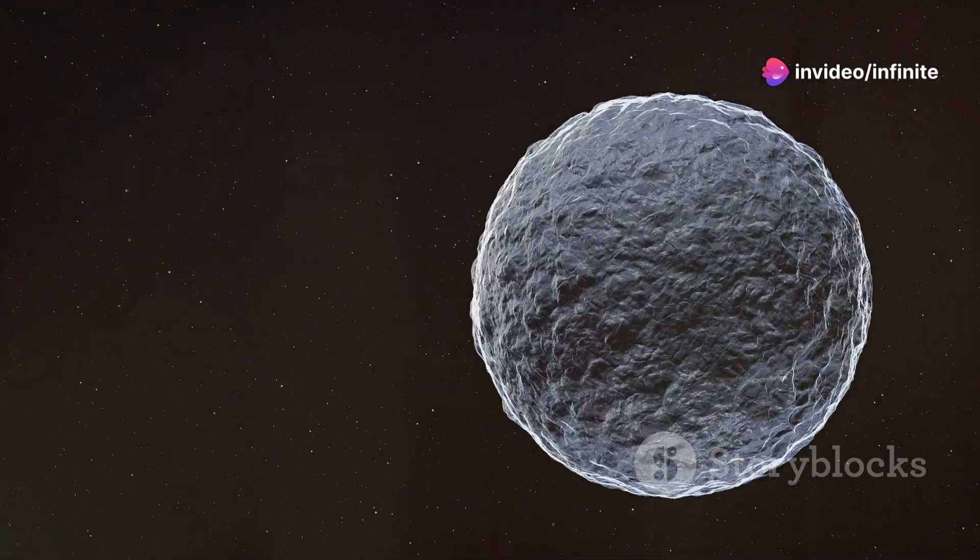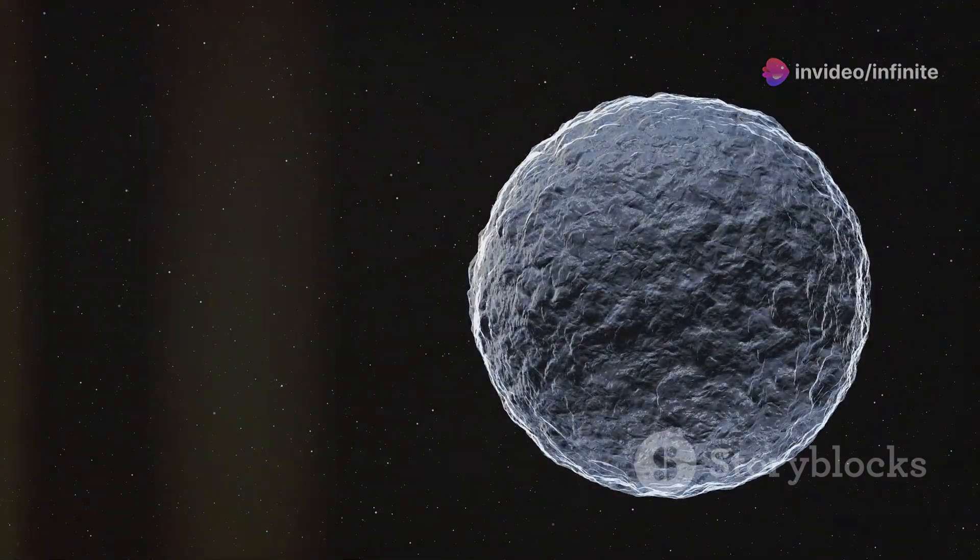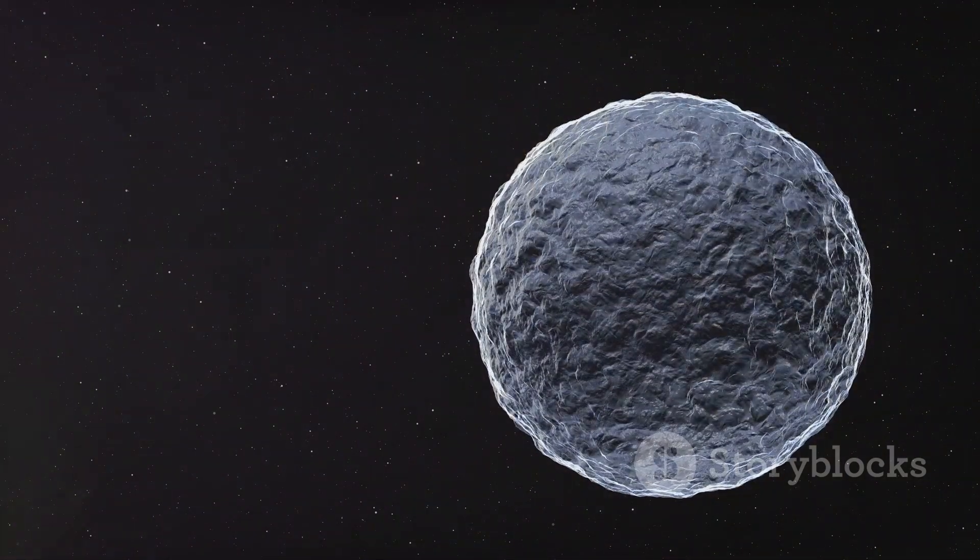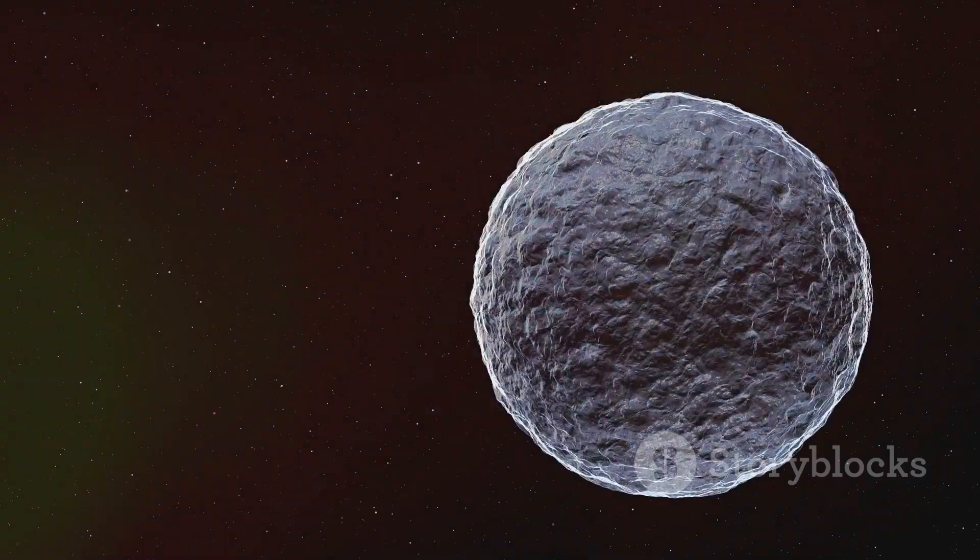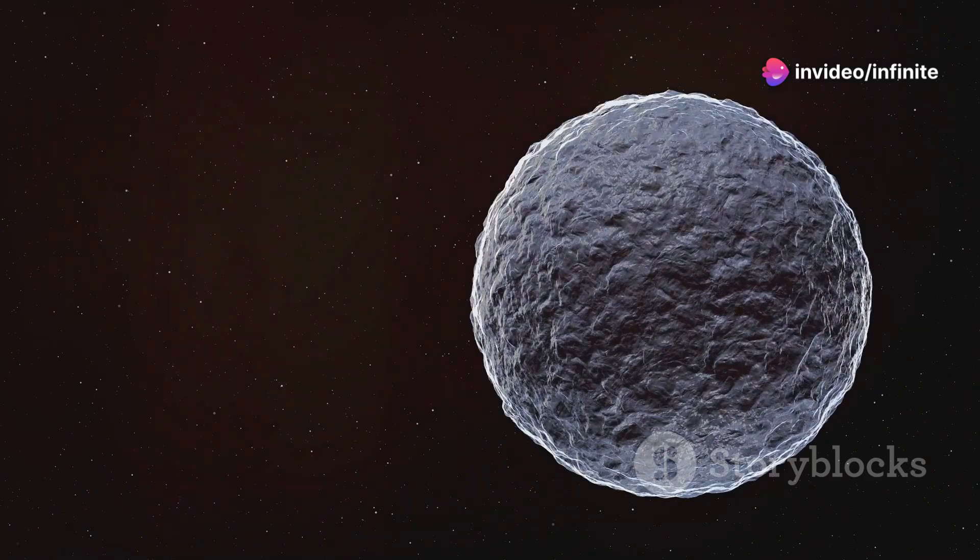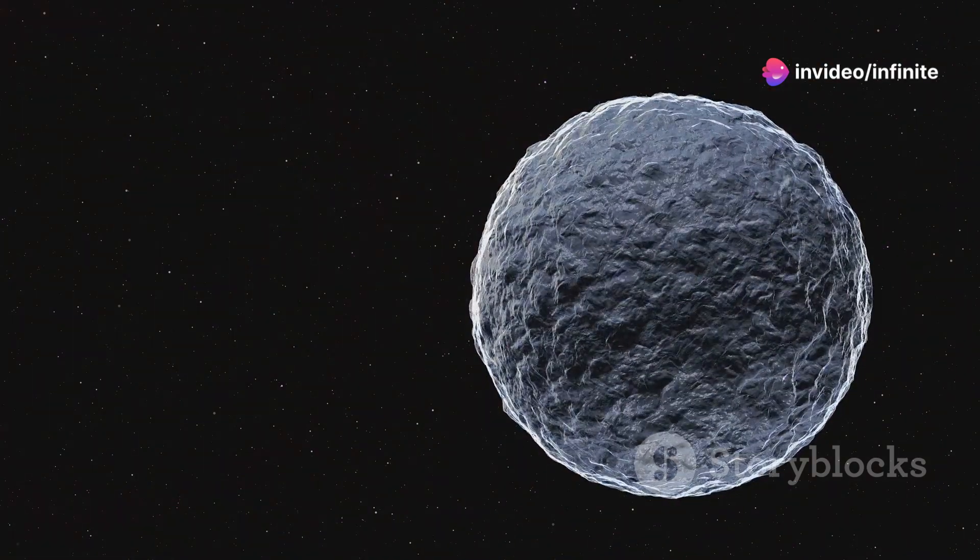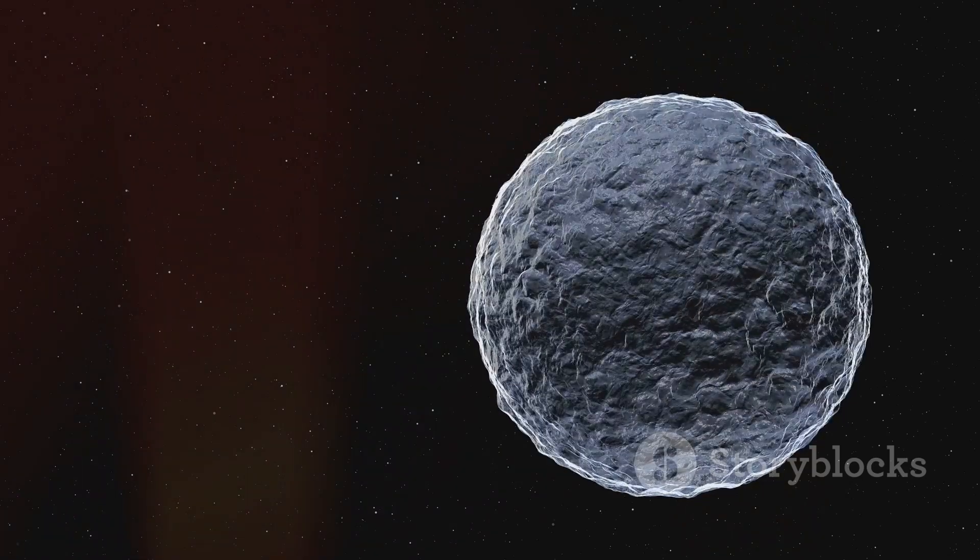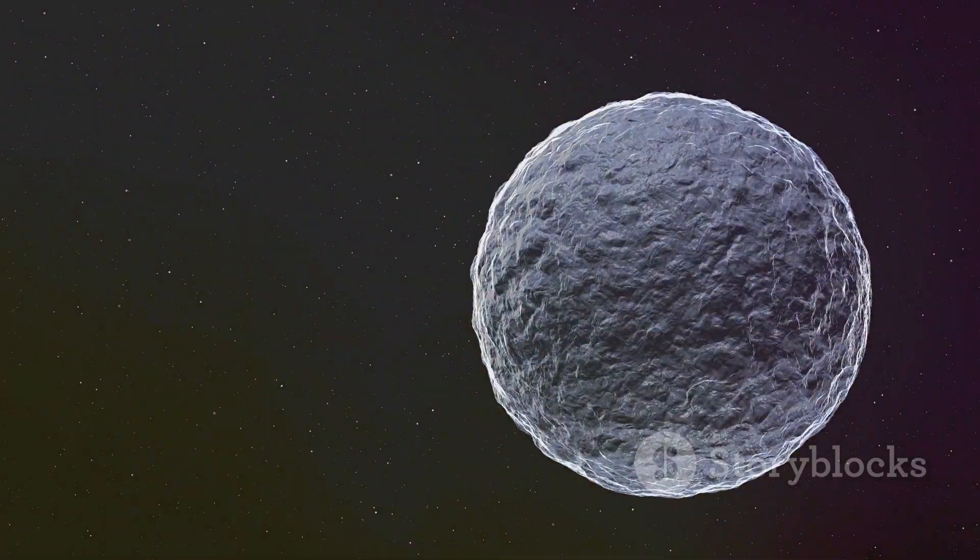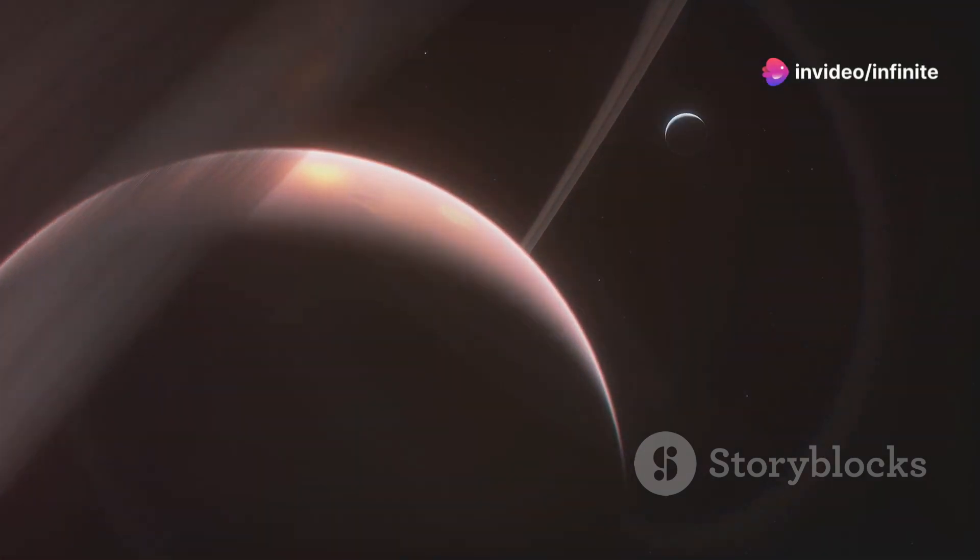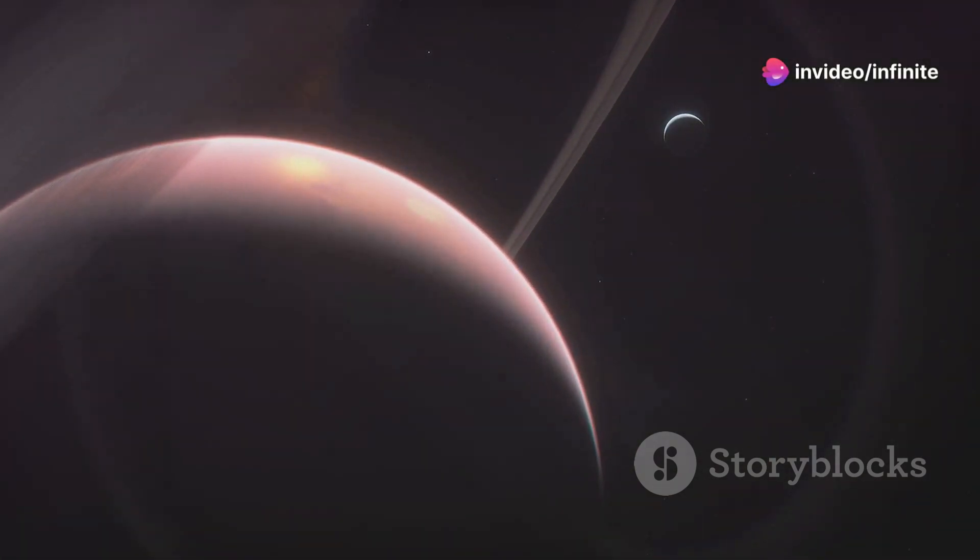Kepler 452c resides within the habitable zone of its star, where temperatures are just right for liquid water to exist on the surface. This zone is crucial because liquid water is a key ingredient for life as we know it. The presence of water increases the chances that Kepler 452c could support some form of life.